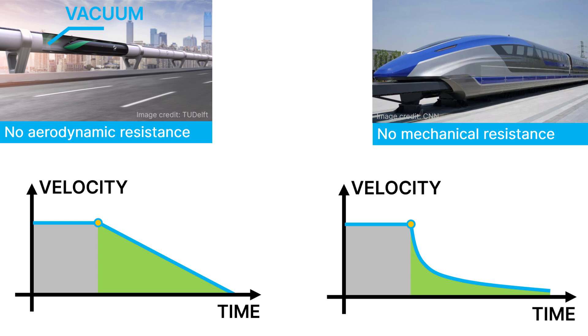On the other extreme, you could eliminate the rolling resistance by mounting your vehicle on magnets, like a maglev train, for example. You would only be left with the aerodynamic resistance, meaning that your deceleration curve would be highly non-linear, with a steep drop-off at the beginning and a very long tail.